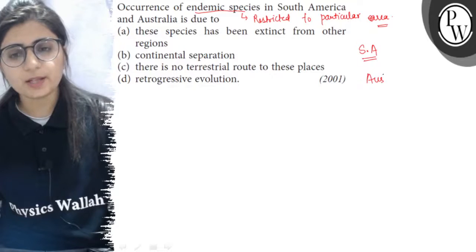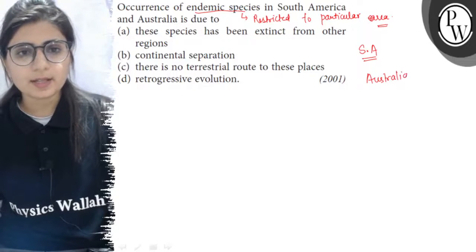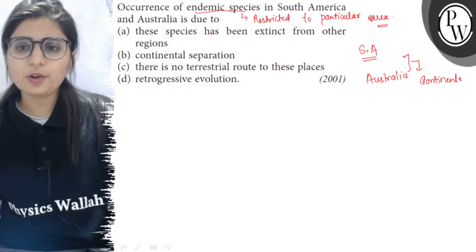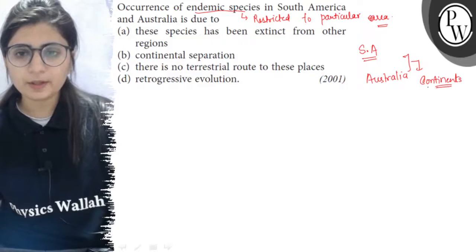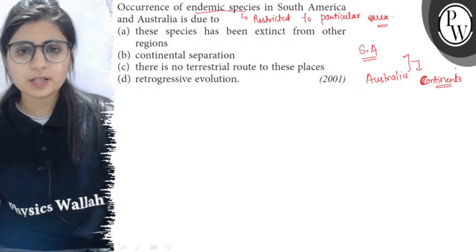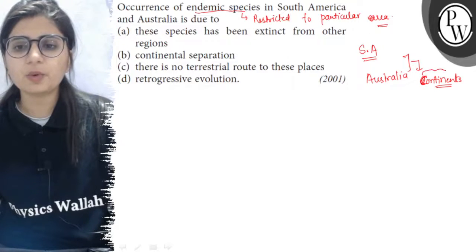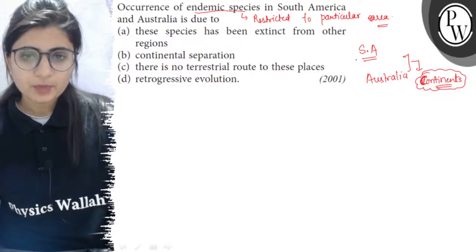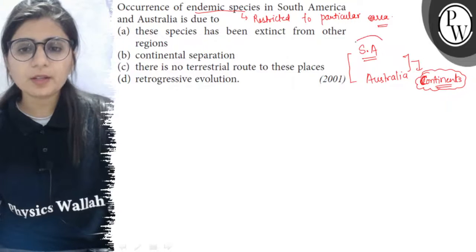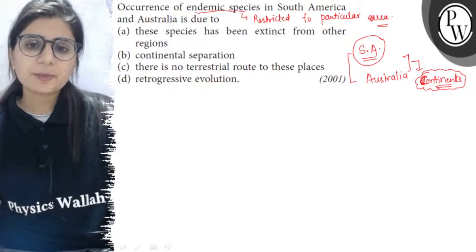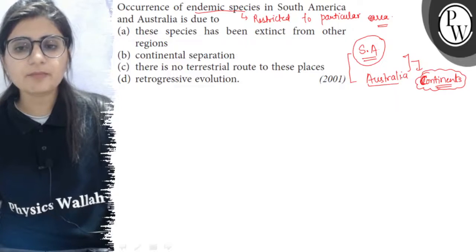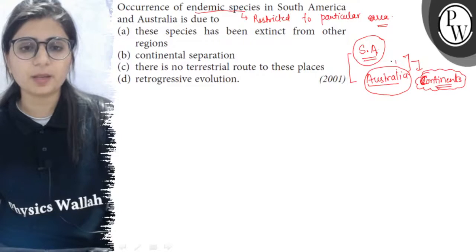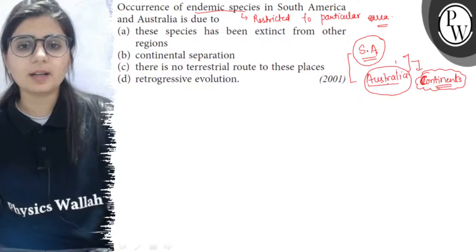Now, South America and Australia represent two different continents. Different continents have different climatic conditions and different vegetation. So the species found in those areas are not found in other areas. The major reason is that different endemic species of South America are not found in Australia, and some species are restricted to Australia and not found in South America. What is the reason behind this endemism?